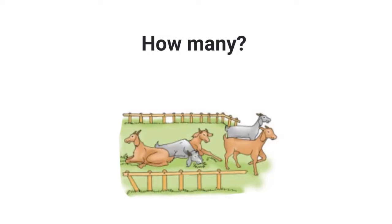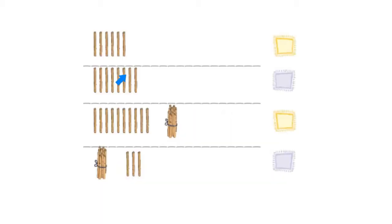Hi kids, today we're going to learn the lesson: how many in this picture? I see one, two, three, four, five, and six sticks. So how many sticks do I see? I see six sticks, so I write the number six in this box.